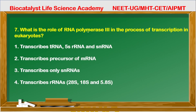Question 7: What is the role of RNA polymerase III in the process of transcription in eukaryotes? In eukaryotes, RNA polymerase III transcribes tRNA, 5S rRNA, and snRNA. RNA polymerase I, II, and III respectively transcribe rRNA, mRNA, and tRNA. The option saying 'transcribes only snRNA' is incorrect because it also transcribes tRNA.